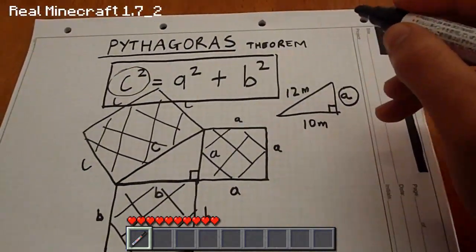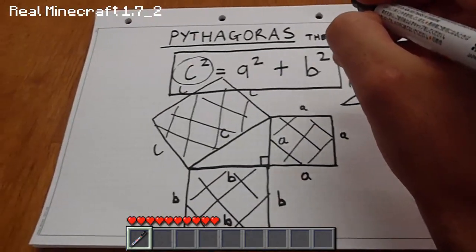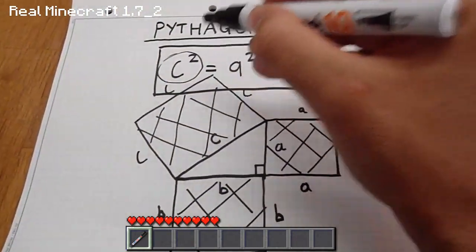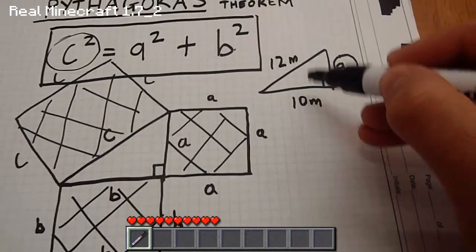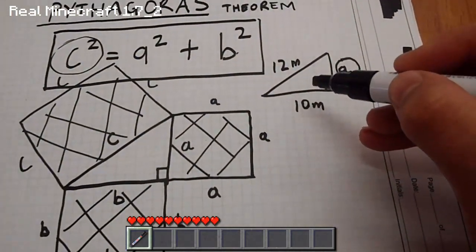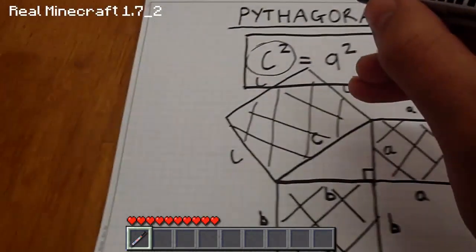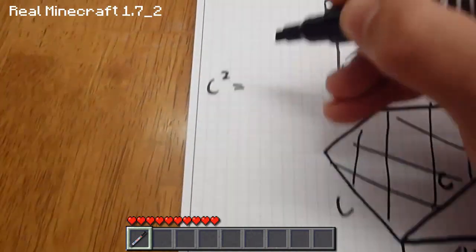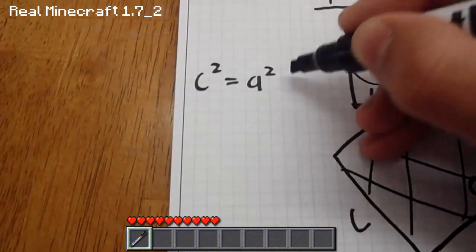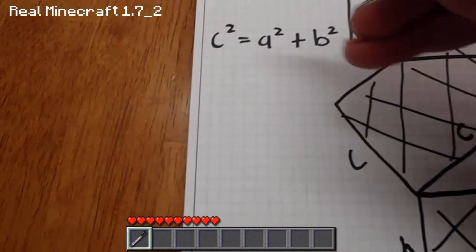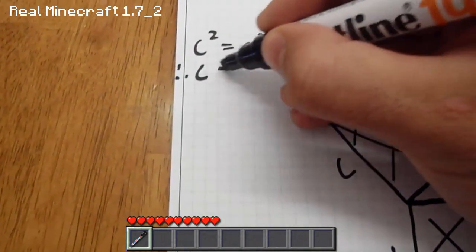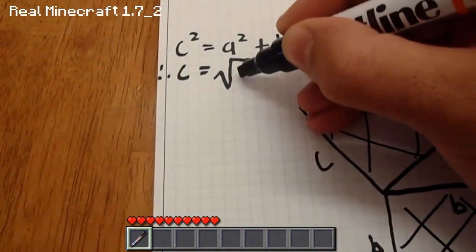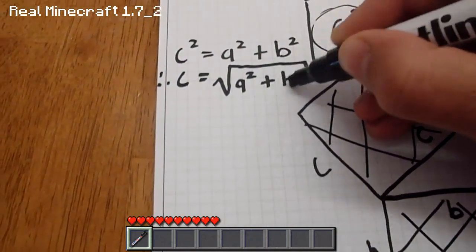Before I go into the examples, I want to rearrange this equation so we can get the formulas for c, a, and b. So if we know two dimensions of the right-angled triangle, we can work out the missing side. So let's quickly derive that. First of all, c squared equals a squared plus b squared, therefore through algebra, c equals the square root of a squared plus b squared.